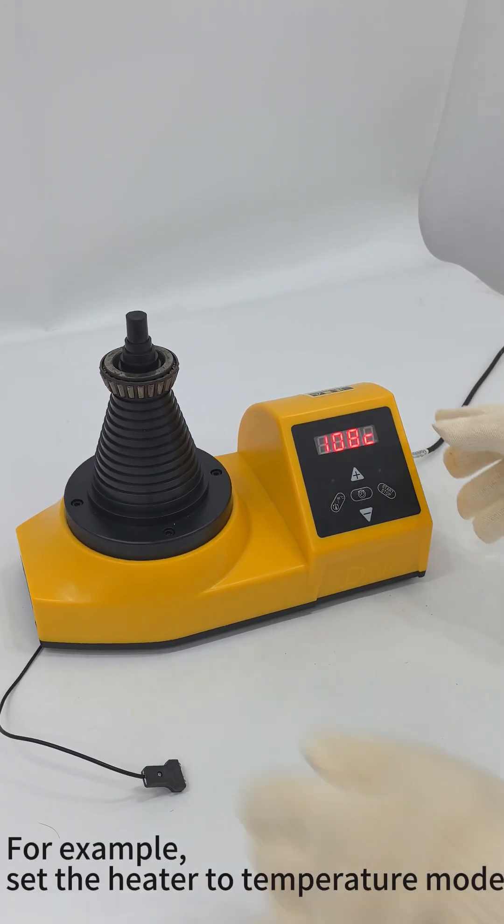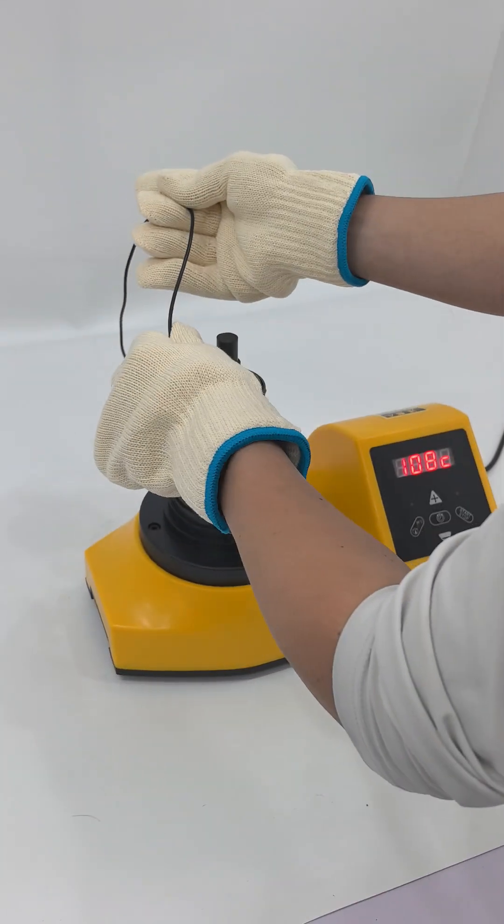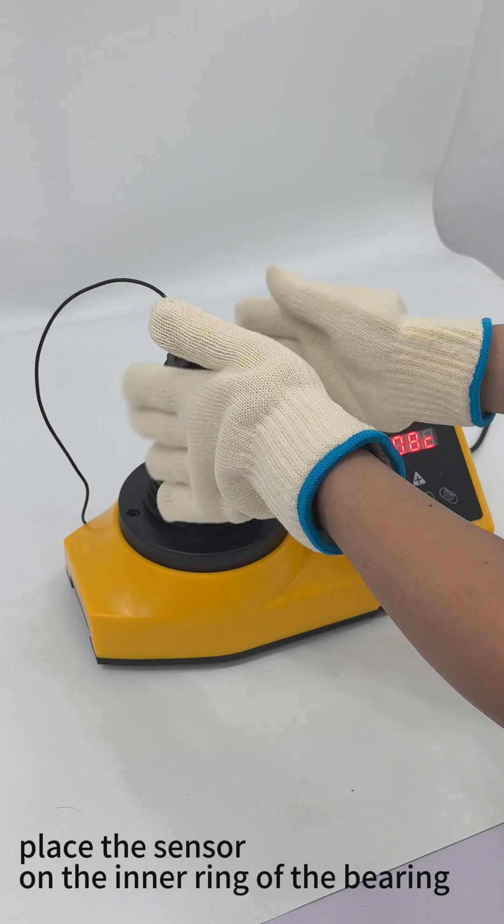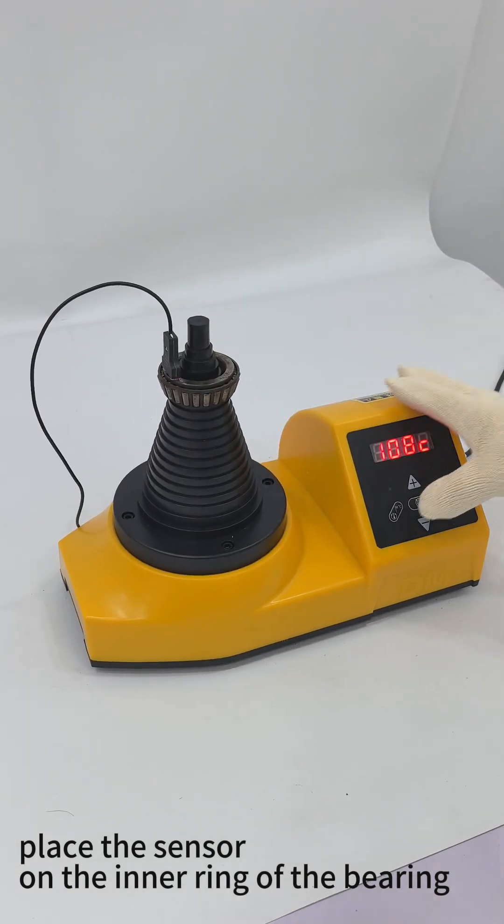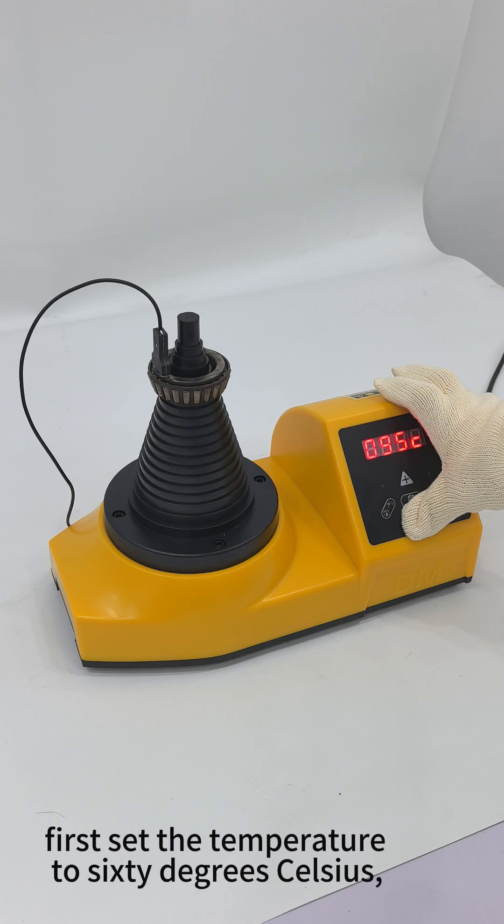For example, set the heater to temperature mode. Place the sensor on the inner ring of the bearing. First set the temperature to 60 degrees Celsius.